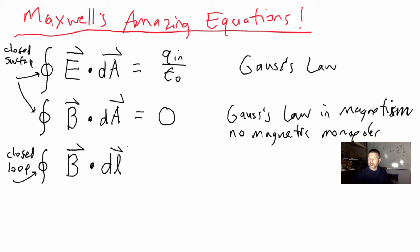B dot DL equals, now let's see if you guys can remember this. This is the one that's pretty messy. I'm going to show you two versions of it. This is the nice clean version: mu naught times I plus I_D, where I_D is the displacement current.